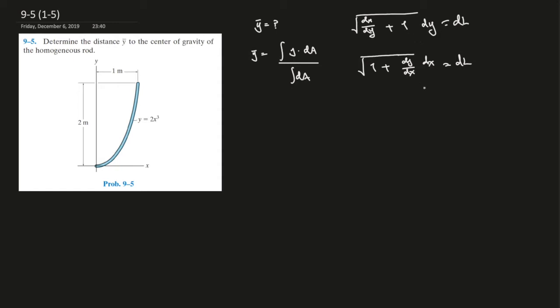So which one should we use? Should we use in terms of dy, or should we use in terms of dx? Usually since we have y in the numerator, it would be convenient if we just write a y here and solve for everything.